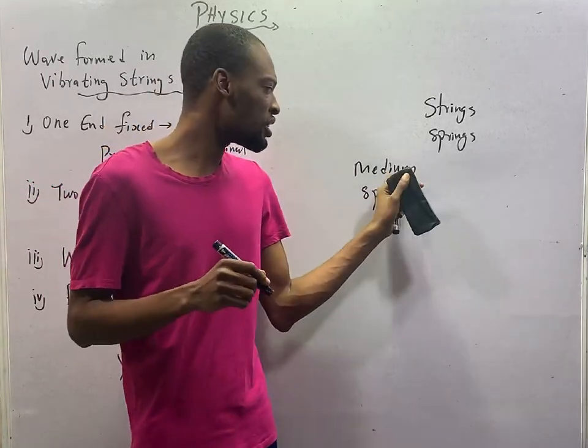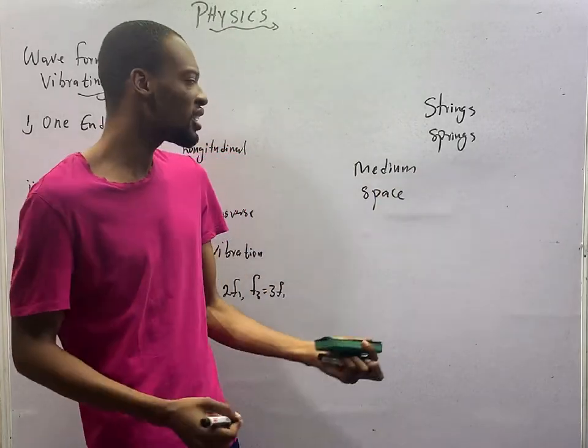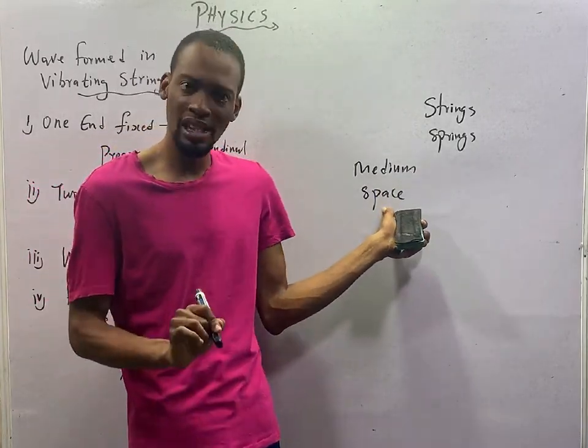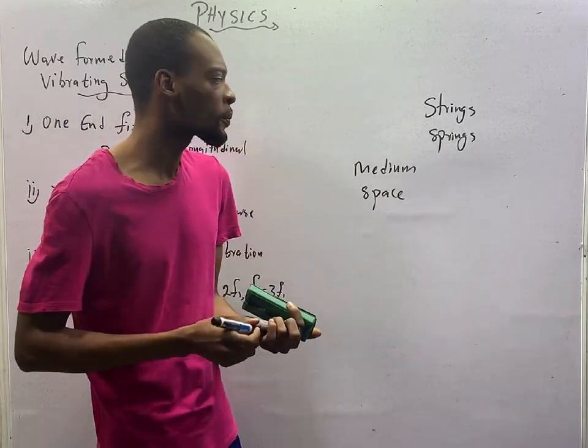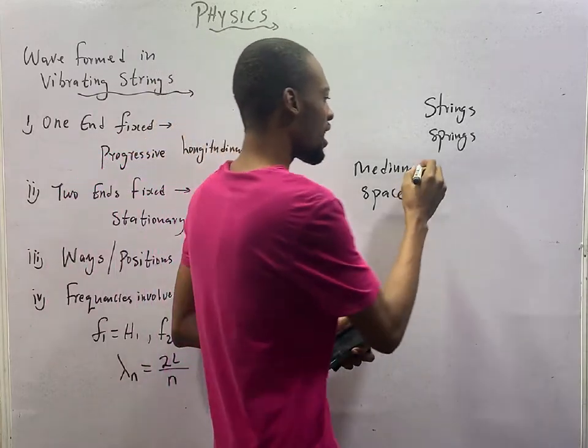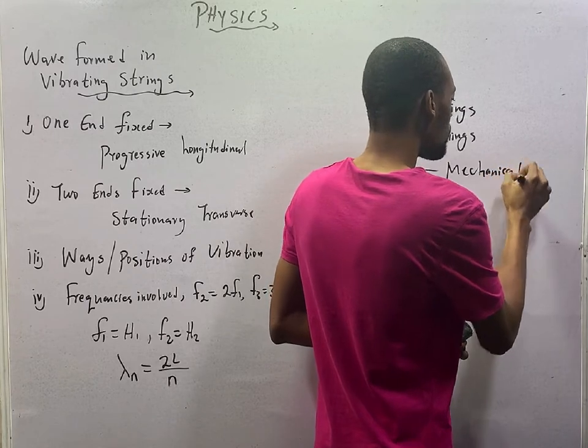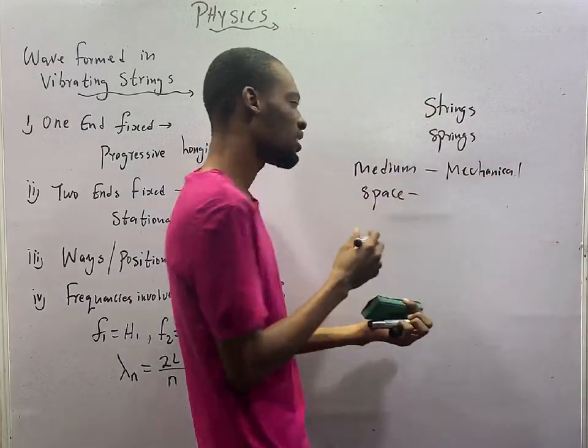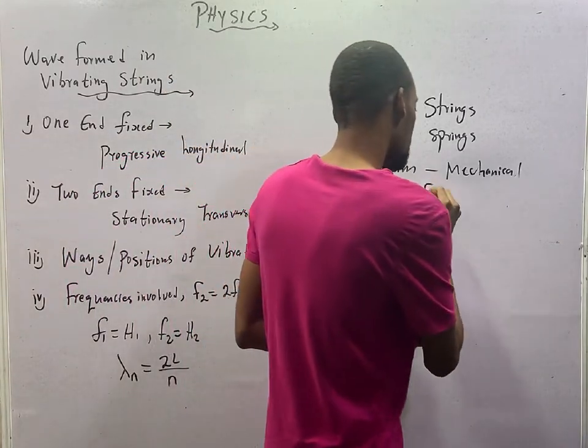Wave can travel through a medium, which means it can require a material or medium to travel. It can also travel through space, meaning it does not require material medium. The guys that require material mediums are referred to as mechanical waves, while waves that do not require material mediums are referred to as electromagnetic waves.